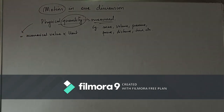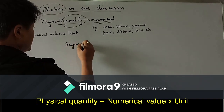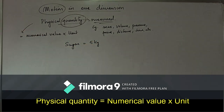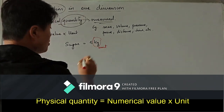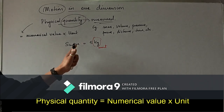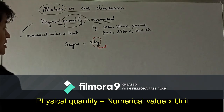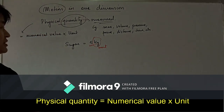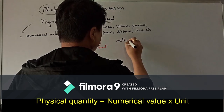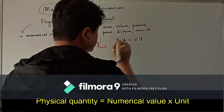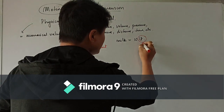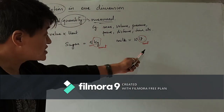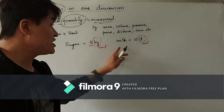For example, the quantity of sugar is 5 kg. The unit used to measure the mass of sugar is kilogram, and this unit contains 5 times the given quantity. Similarly, the quantity of milk is 10 liters, where the unit is liter and it contains 10 times the given quantity of milk.